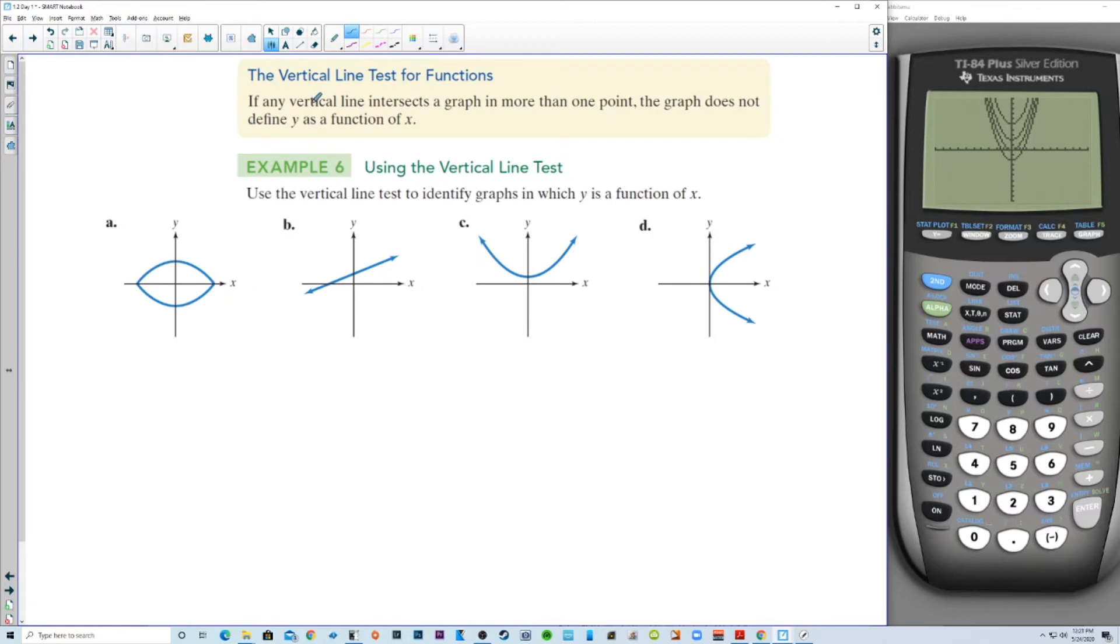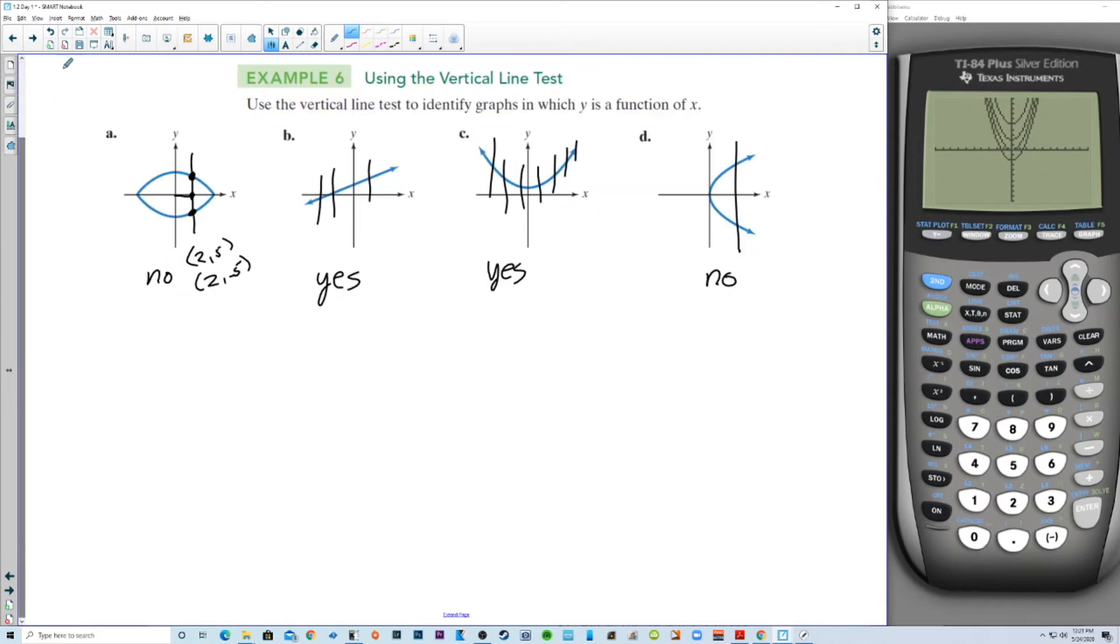The vertical line test for functions. If any vertical line intersects a graph in more than one point, the graph does not define y as a function of x. So use the vertical line test to identify graphs in which y is a function of x. This is not a function. So no, that is not a function. This vertical line passes two points. So for every x value, for every x value here, we get out two different y values. So like if we plugged in, let's say, an x value of 2, we're getting out, let's say, 5. And we're getting out negative 5 also. So the x values are repeating, which means it's going to fail the vertical line test. Now, as long as you don't have a vertical line, all lines are functions. So yep, that's a function. We cannot create a vertical line that passes two points on this one. So this is yes. This is not a function. It fails the vertical line test. So this is not a function.